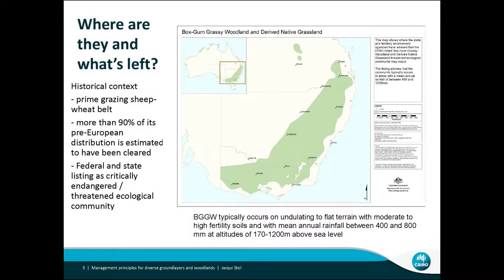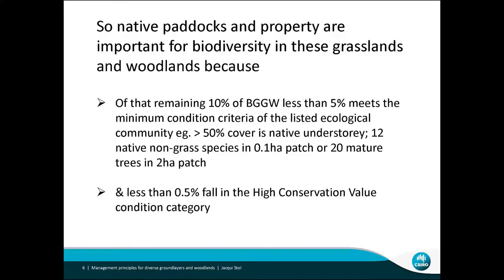These communities occurred all the way through Queensland, down through New South Wales, on those high fertility soils — basically the sheep wheat belt. Of course it's been grazed, and more than 90% of its pre-European distribution is estimated to have been cleared. Consequently, it's listed federally and at the state level as critically endangered — a threatened ecological community.